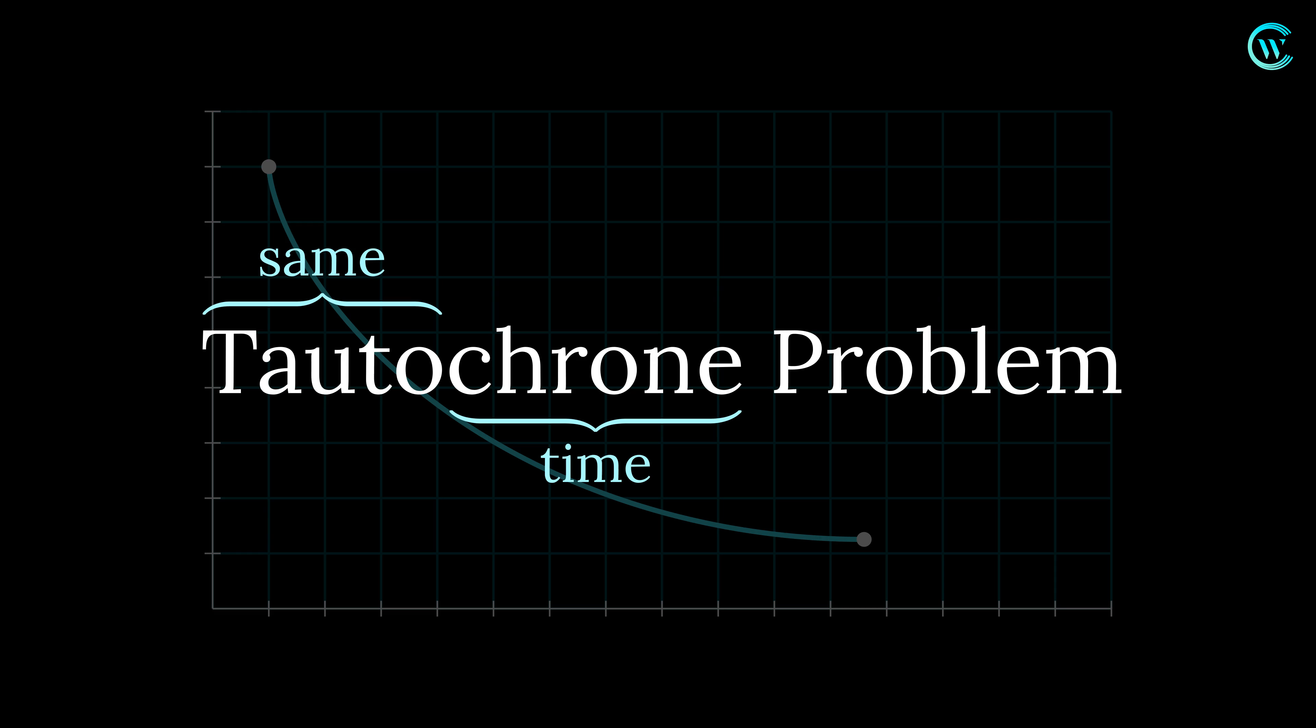In other words, the time taken by the object to reach the bottom is independent of its starting position. This half portion of a cycloid is also called an isochrone curve.